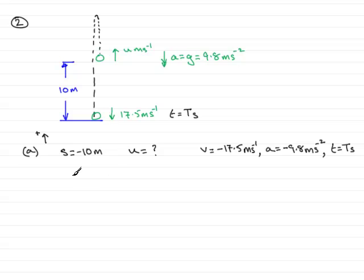So in part a then, we're trying to find out what u is, and so I've got to remember one of the equations to use. So the equation that would involve these variables, apart from big T, would be the one that is v squared equals u squared plus 2as.